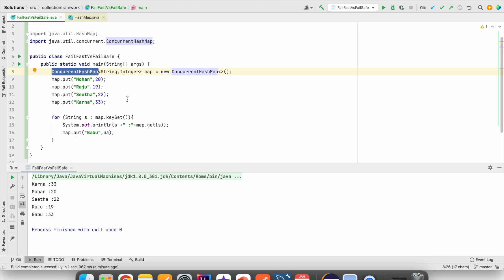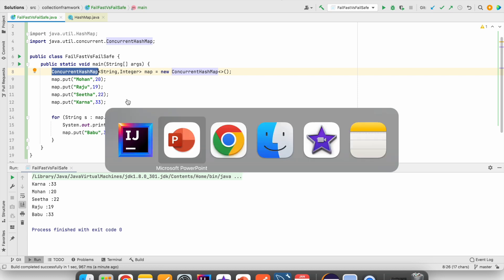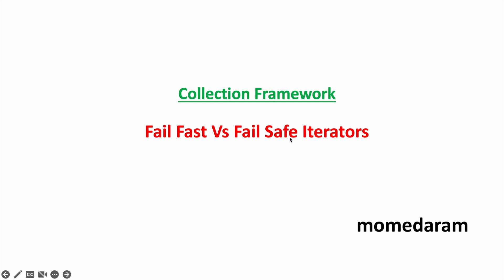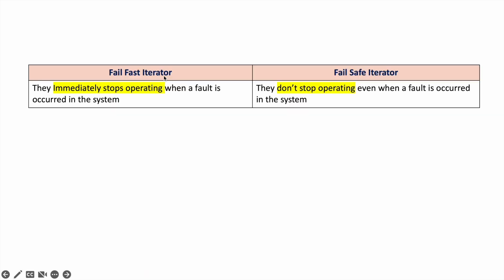To understand this, we have to understand two more terminologies: FailFast and FailSafe iterators. FailFast iterators immediately stop operating when a fault is occurred in the system. FailSafe iterators don't stop operating even when a fault has occurred in the system. So FailFast iterators, if an exception or any fault occurred, they will stop the process.